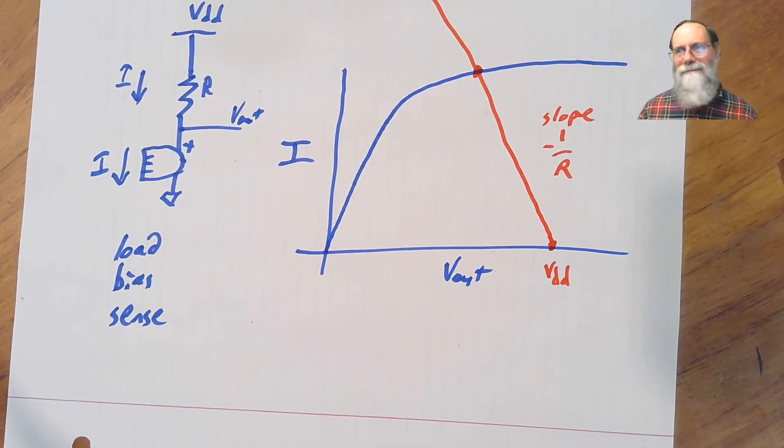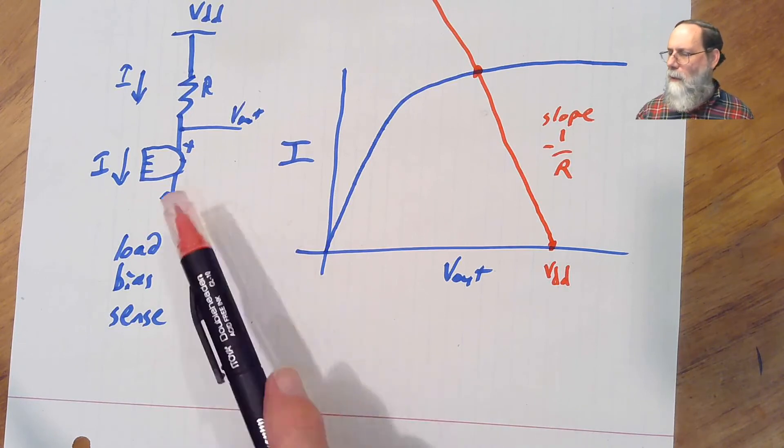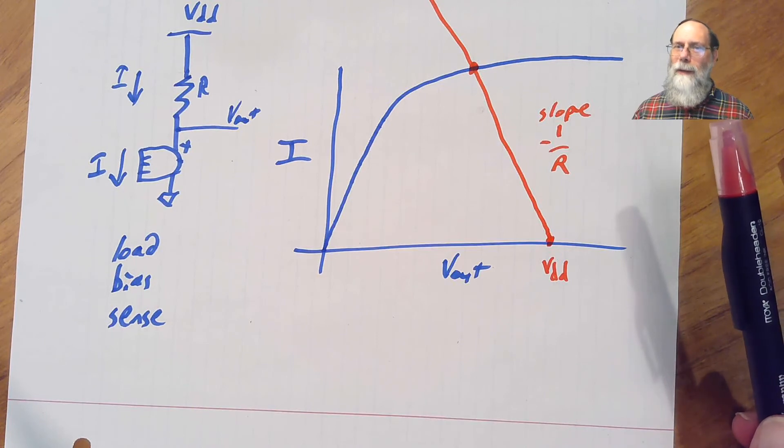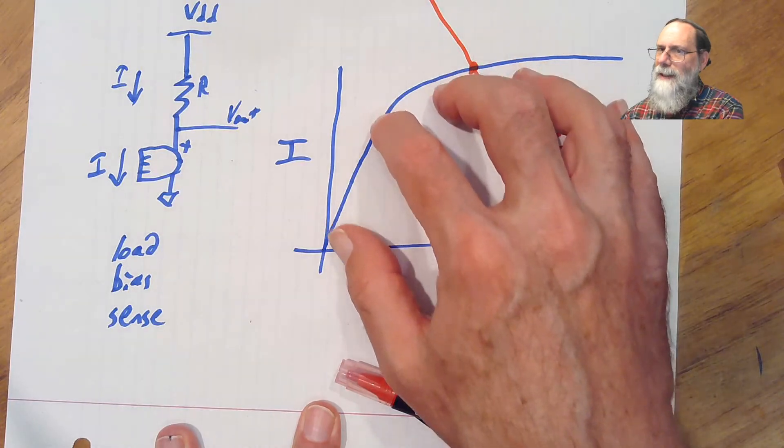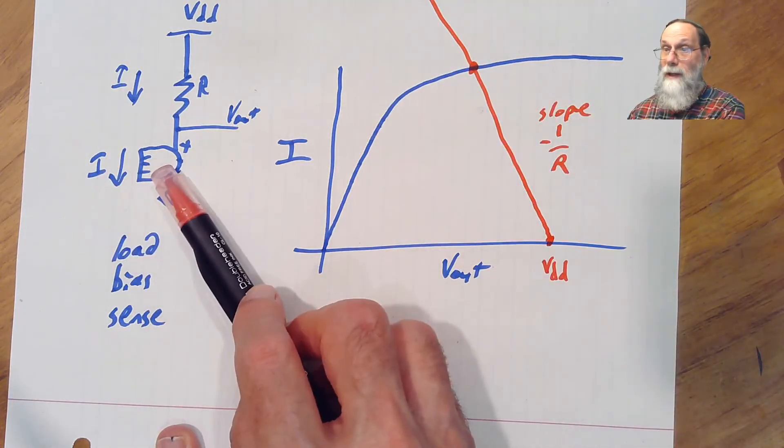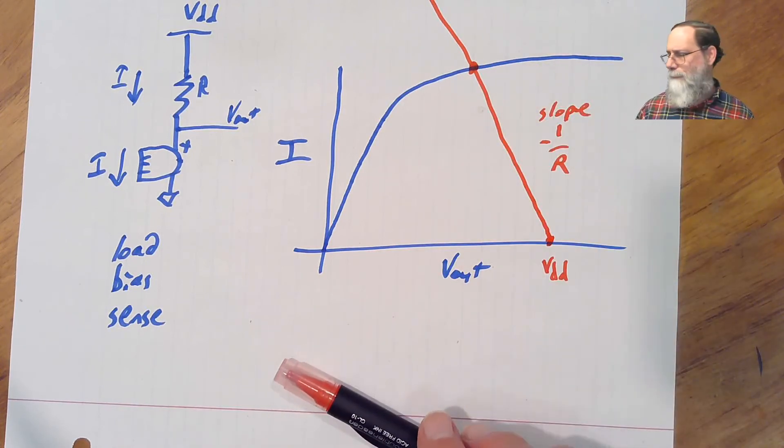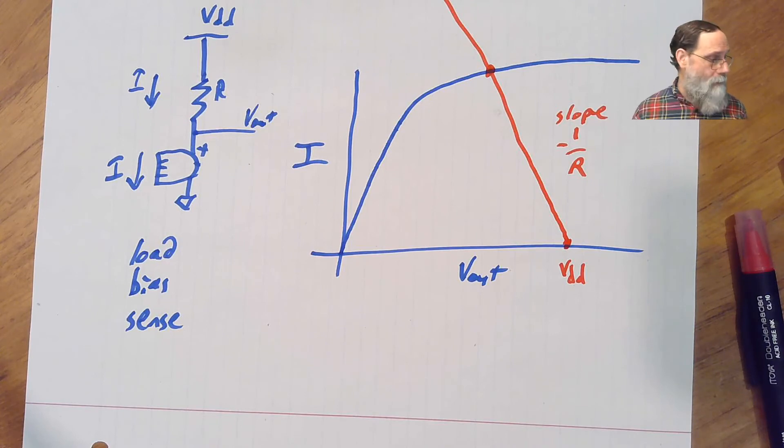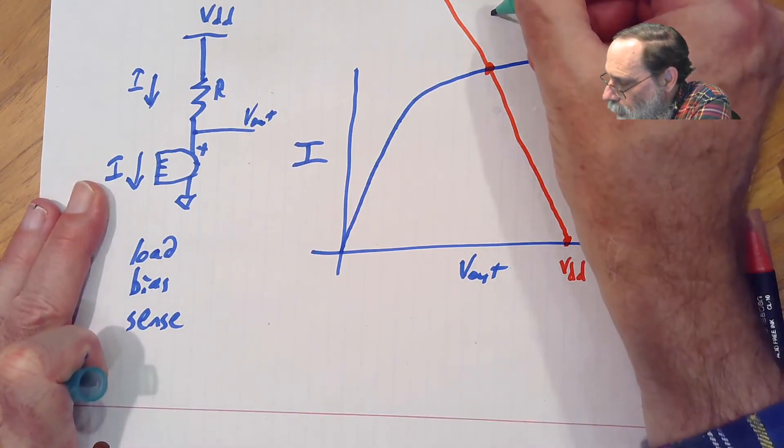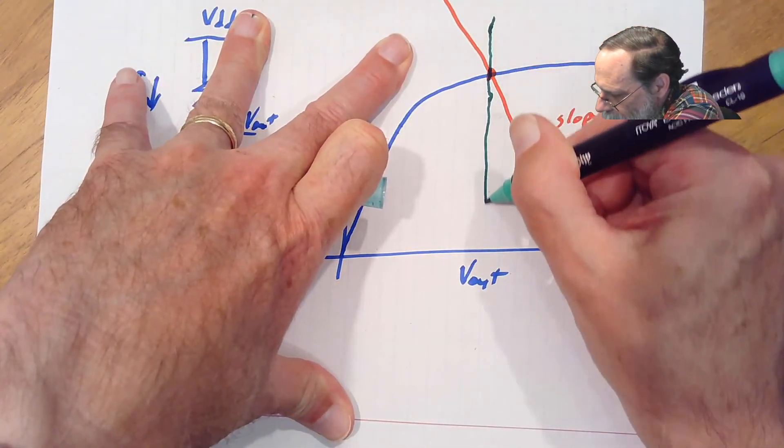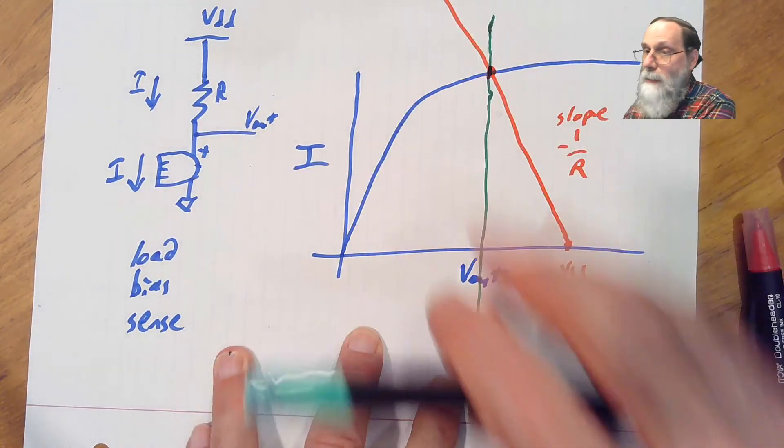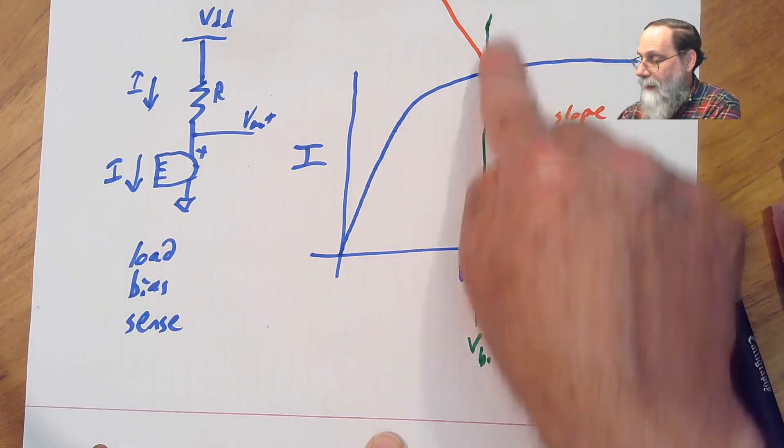There is one sort of awkward thing about this, and that is that we're never really at a fixed bias here, because this curve that I've drawn here for the microphone is only true for the microphone with no input. This whole curve moves up and down a little bit as we change the sound into here, and as a result the operating point of the microphone is bouncing around just a little bit. That's not a serious problem, and this is indeed the most popular circuit for biasing a microphone, but there is another choice.